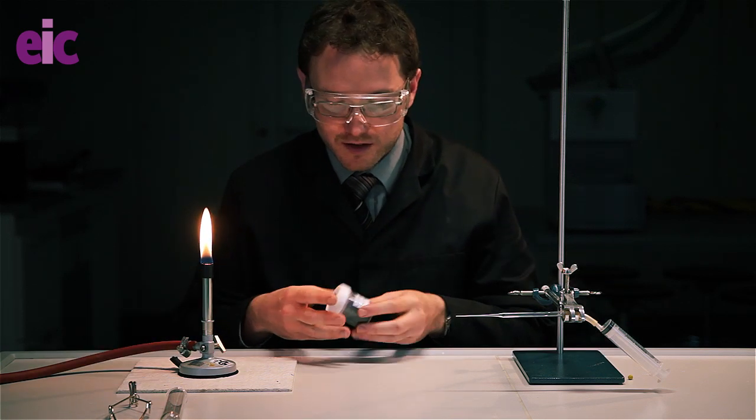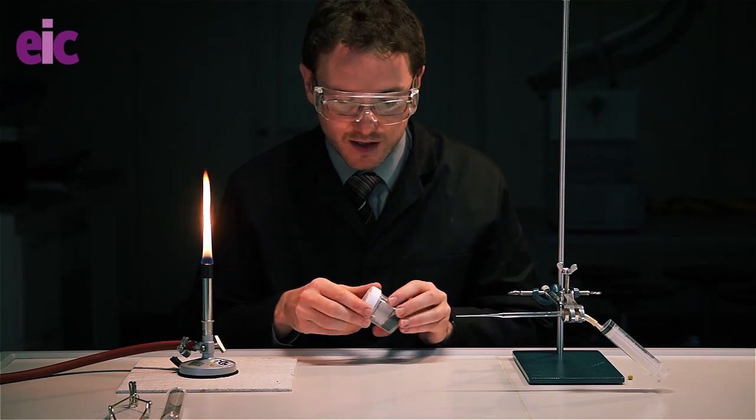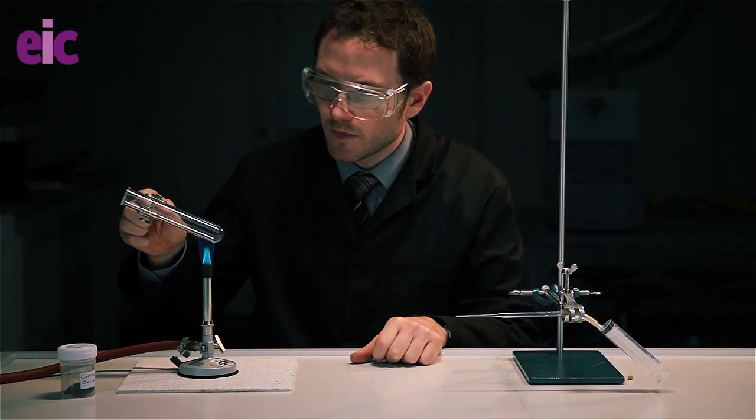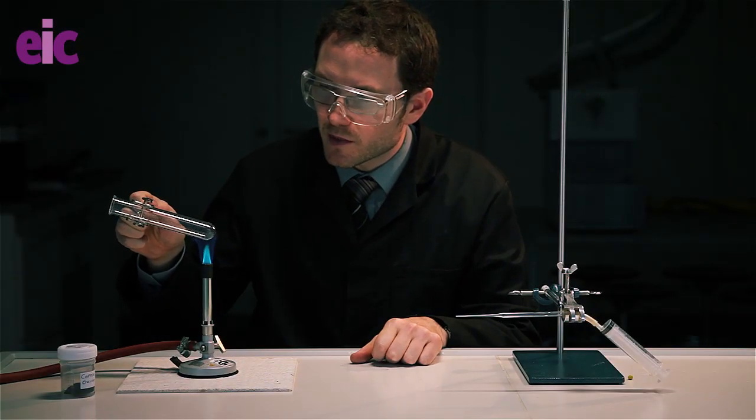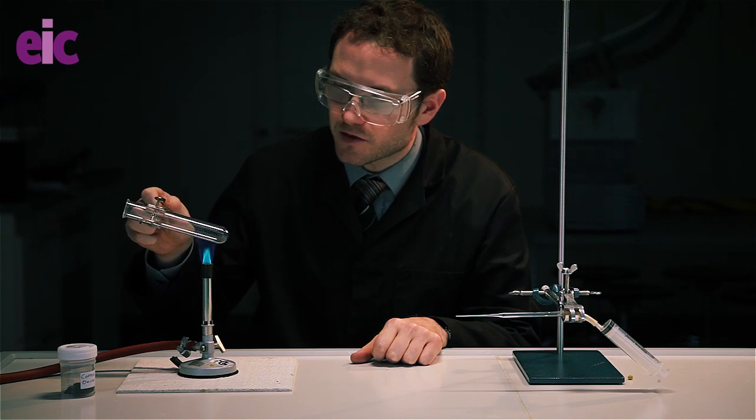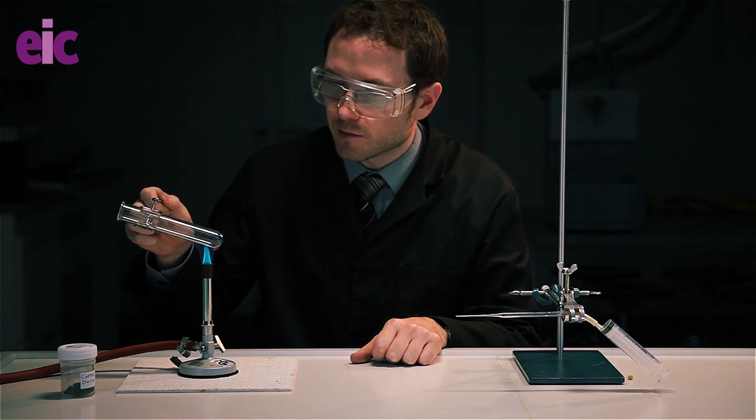I'm going to start off with some copper oxide. It's quite good at absorbing moisture from the atmosphere, so I'm going to dry this off in a Bunsen flame before I get started. Now we only need a very small amount of the copper oxide for this experiment to work, about a micro-spatula load, about 0.1 grams. So I'm just drying it off a little bit.